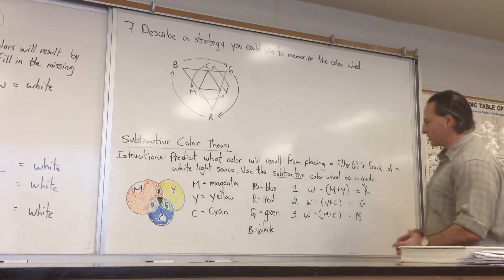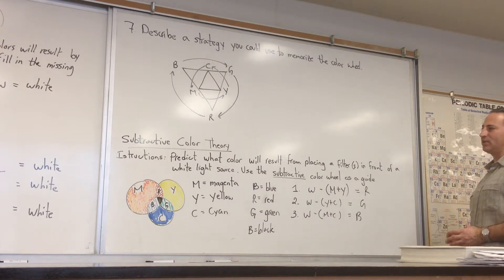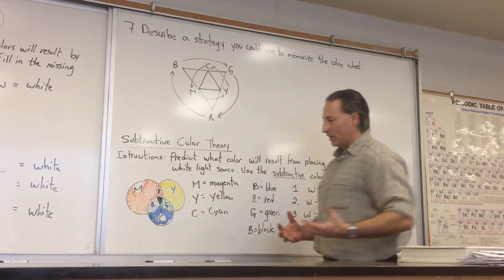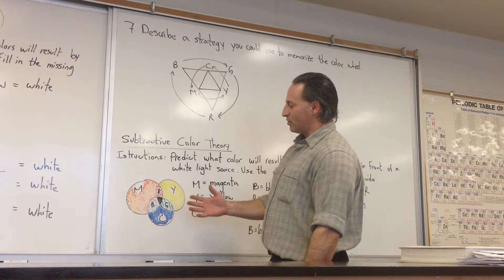We can predict what colors will result from placing filters in front of a white light source using the subtractive color wheel. Now, the white light is shining through the filters and producing different colors.